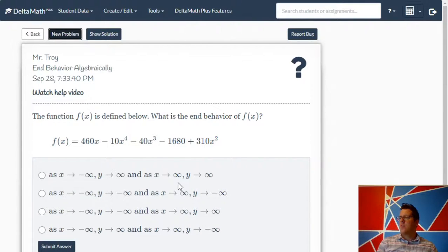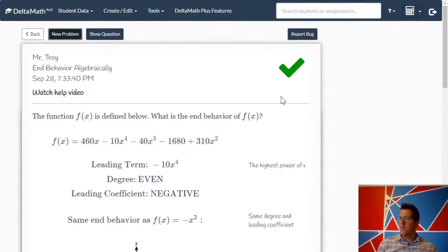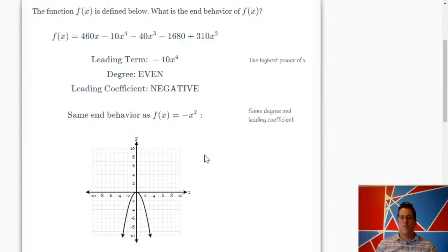So as x goes to the positives, y should be going to the negatives. And as x goes to the negatives, y should be going to the negatives. Let's see if that's it. All right, cool. So this has the same end behavior of negative x squared. I like that.